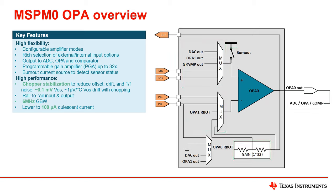In addition, the amplifier supports rail-to-rail inputs and outputs. A gain bandwidth of 6 megahertz, with a quiescent operating current as low as 100 microamps.